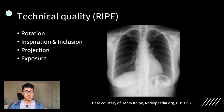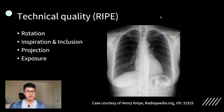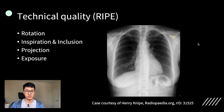For rotation, you're looking at whether the patient is rotated. To assess that, you make sure the spinous processes of the vertebral column are in between the heads of the clavicles. This is important because if a patient is rotated, you might think that their mediastinum is deviated when it actually isn't.